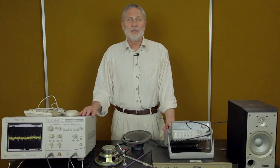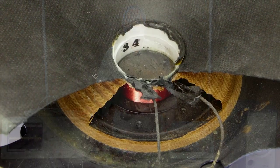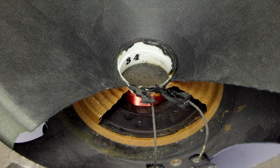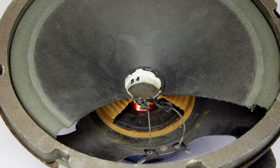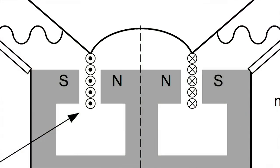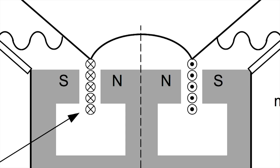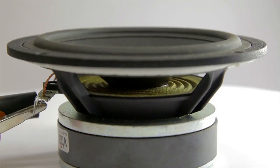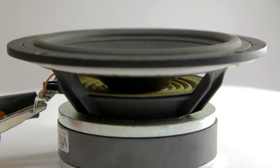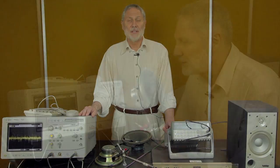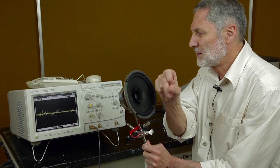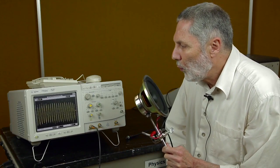A conventional loudspeaker has a circular coil of wire in the gap of a circular magnet. The coil is attached to a cone. When an oscillatory electric current is passed through the coil, there is an oscillatory magnetic force on the coil, which moves the coil and the cone, thus causing sound to be emitted. The loudspeaker can act in reverse as a microphone, although it is not very sensitive and is subject to noise.